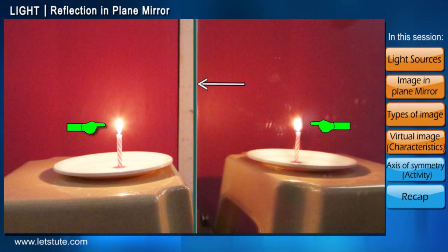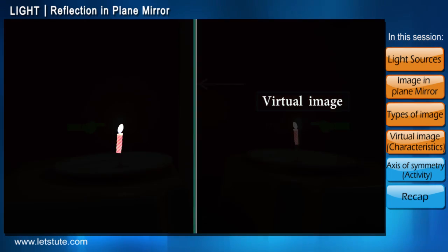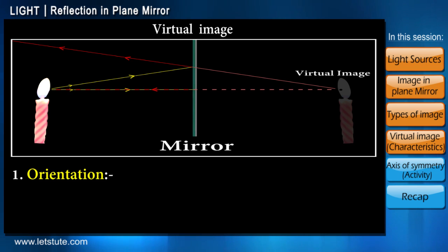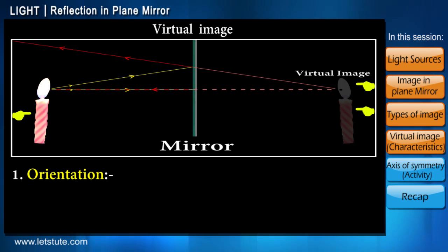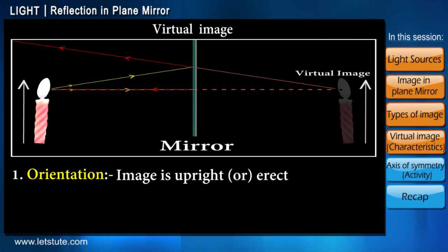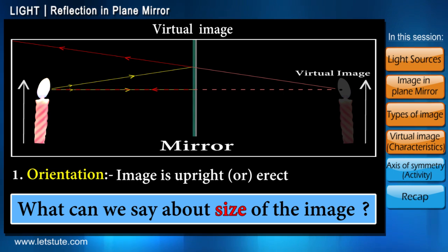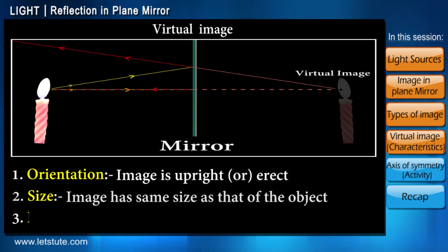So if we compare the object to its reflection in the plane mirror, we see that apart from it being virtual, there are other characteristics. First is orientation: when we look at the object, the flame is on top while the candlestick is just below it. Comparing these positions to those in the image, they remain unchanged — when the orientation of the image has not changed with respect to the object, we say the image is upright or erect. The size of the image is also the same as that of the object.